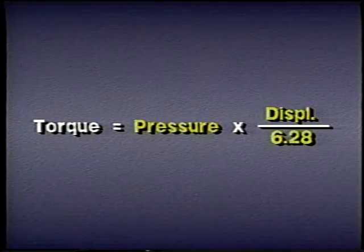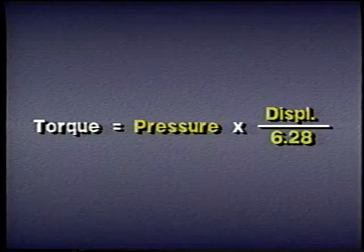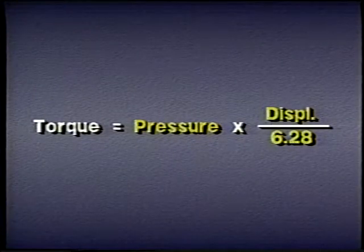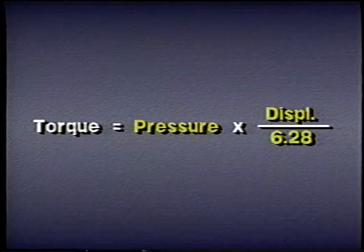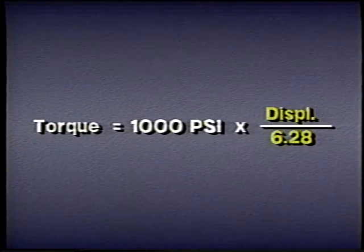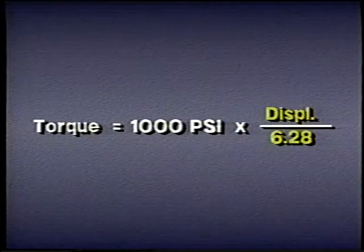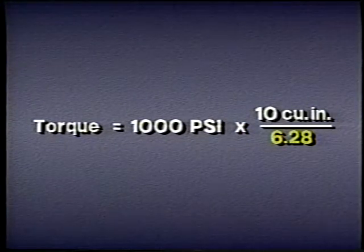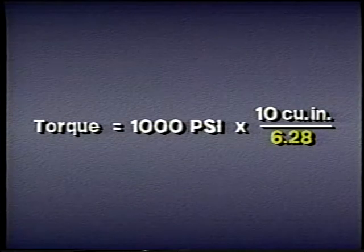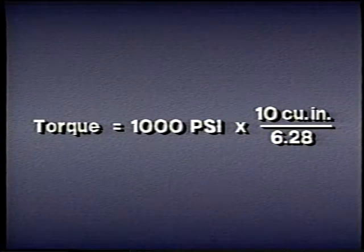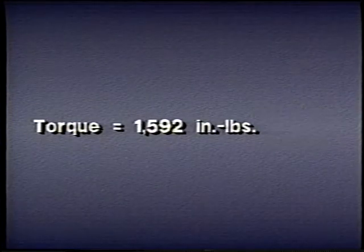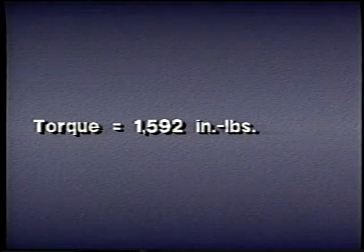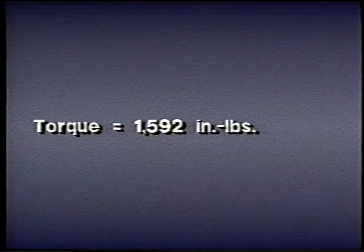Remember, all of our examples assume 100% efficiency. For example, if the pressure is 1,000 pounds per square inch and the displacement of the motor is 10 cubic inches, then the torque is 1,000 times 10 divided by 6.28, or a little more than 1,592 inch-pounds.